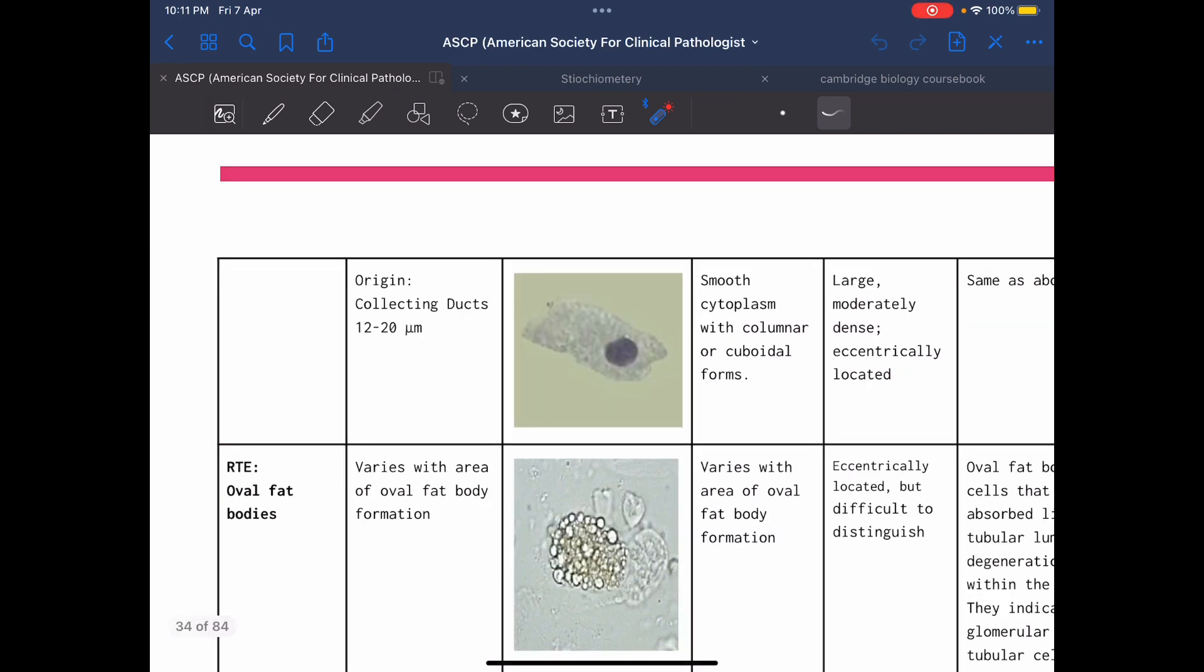The second form, which is columnar, you will find the nucleus eccentric. The presence of this one is the same, either tubular necrosis or kidney function problem.